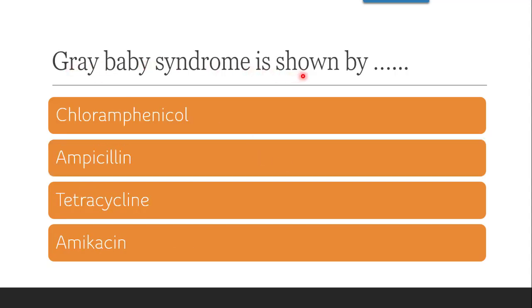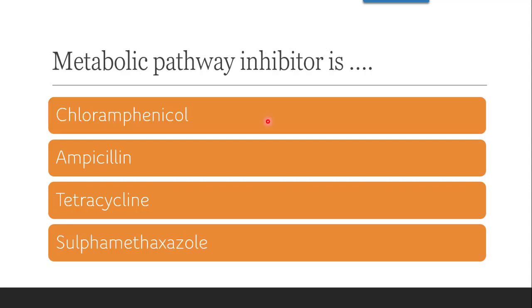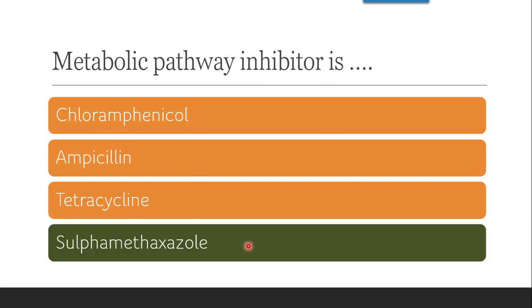The next question is: grey baby syndrome is a side effect of — chloramphenicol, ampicillin, tetracycline, or amikacin? The correct answer is chloramphenicol, which belongs to the miscellaneous class. Grey baby syndrome is characterized by grey or blue coloured skin and hypothermia, caused by the accumulation of chloramphenicol specifically in premature babies. The next question is: which is a metabolic pathway inhibitor — chloramphenicol, ampicillin, tetracycline, or sulfamethoxazole? The correct answer is sulfamethoxazole. Sulfonamides are metabolic pathway inhibitors and folic acid synthesis inhibitors.